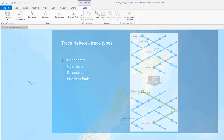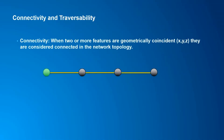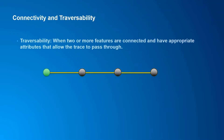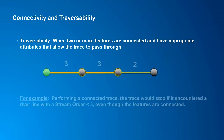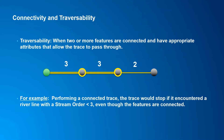The ability of a feature to be traced in the network is impacted by its connectivity and traversability. Connectivity describes the state in which two features in the network are connected through geometric coincidence, whereas traversability describes situations where two features are connected and also have appropriate attributes that allow the trace to pass through or traverse the feature. The traversability of features is defined using advanced options and network attributes in the trace geoprocessing tool.